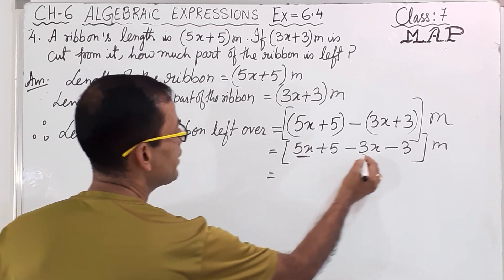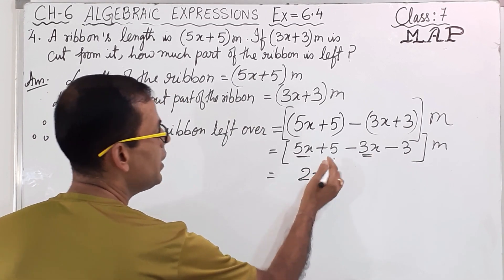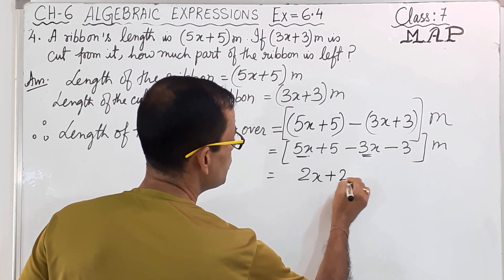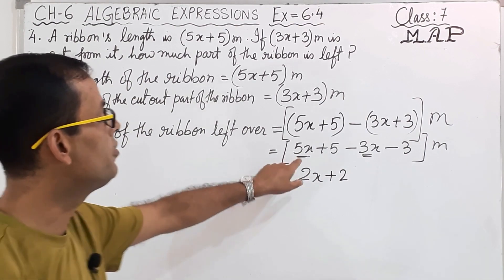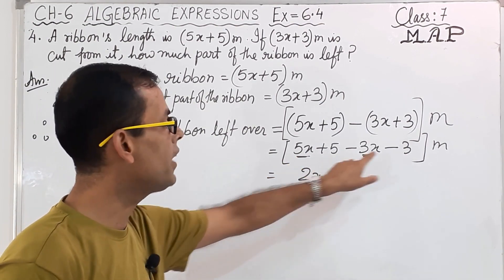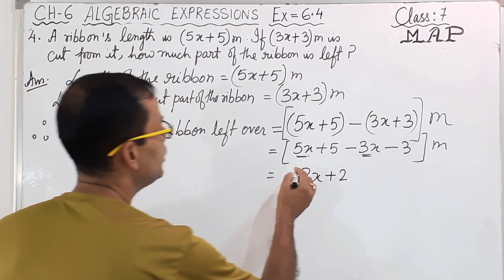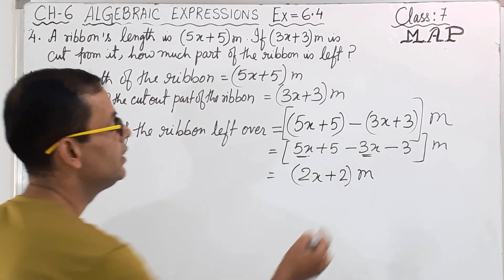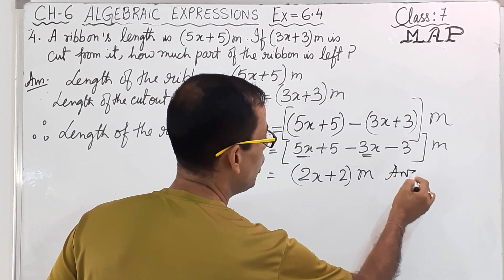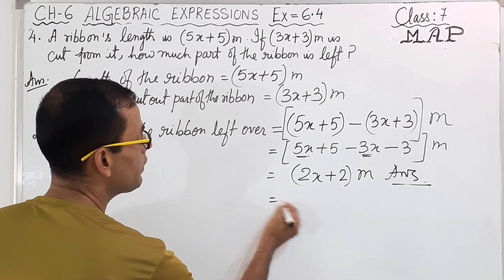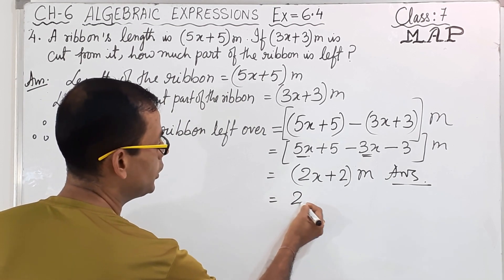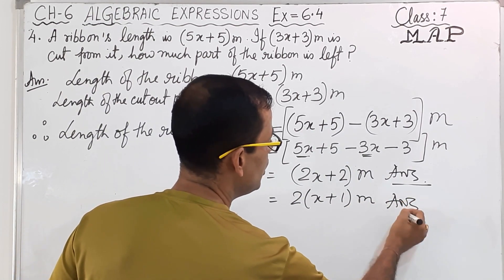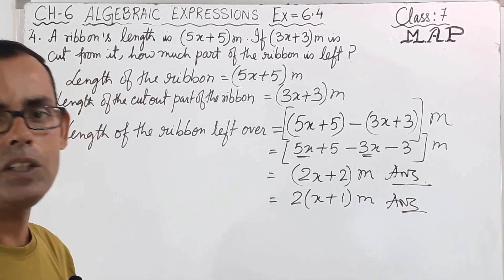Now if I want to open the bracket: 5x plus 5 minus 3x, plus minus minus 3. Now like terms: 5x minus 3x gives 2x, plus 5 minus 3 gives plus 2. So 5x minus 3x is 2x, and 5 minus 3 is plus 2. So the answer is 2x plus 2 meters. Or another thing you can do: you can take 2 common, giving 2(x plus 1) meters. So this also is the answer. Whichever you find easy, you can do it.